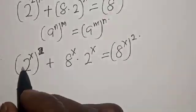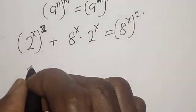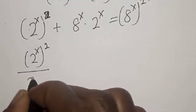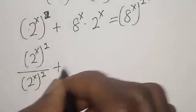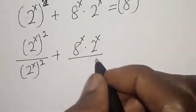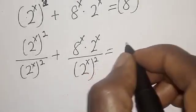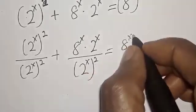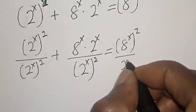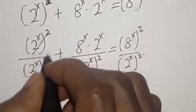Divide both sides by 2 raised to power s squared plus 8 raised to power s, plus 8 raised to power x multiplied by 2 raised to power s squared. In this one we cancel this.